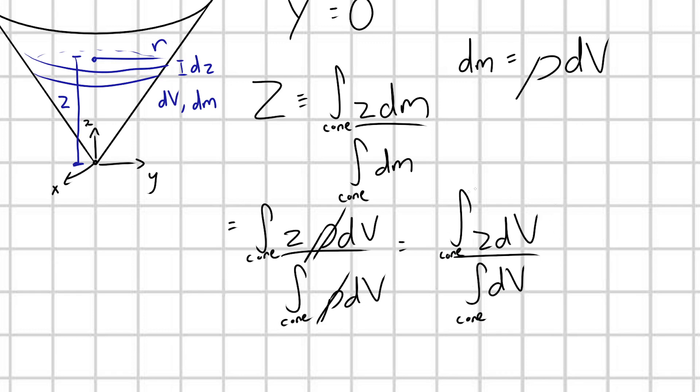And really, this is a statement that for a uniform object, your center of mass reduces down to the centroid of your object, which is a purely geometric quantity. Notice how we have no dependence on mass or mass density anymore.